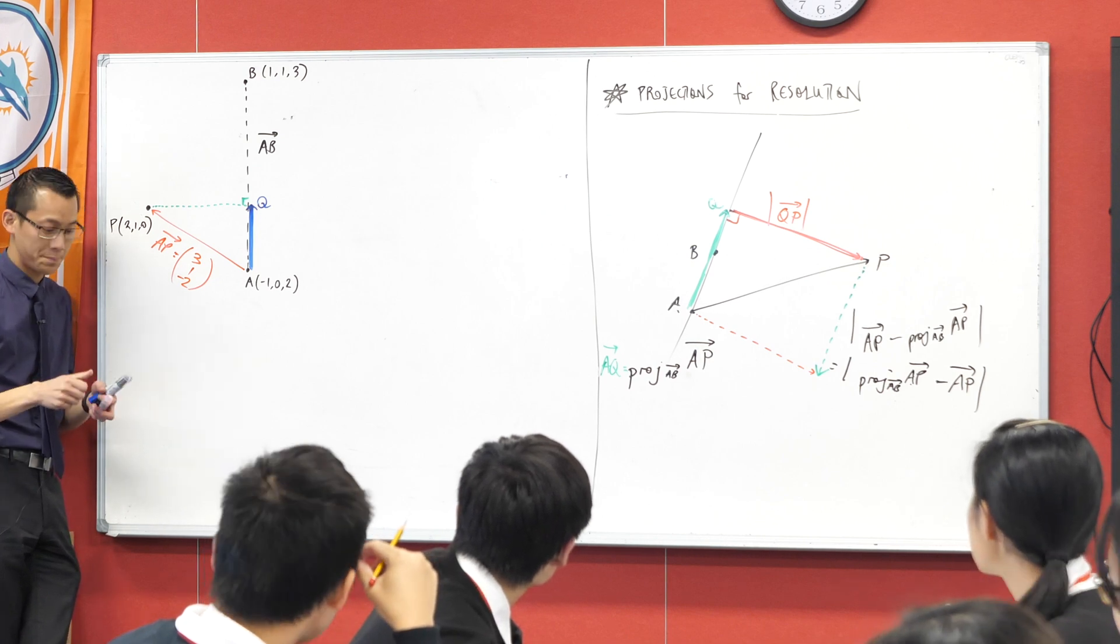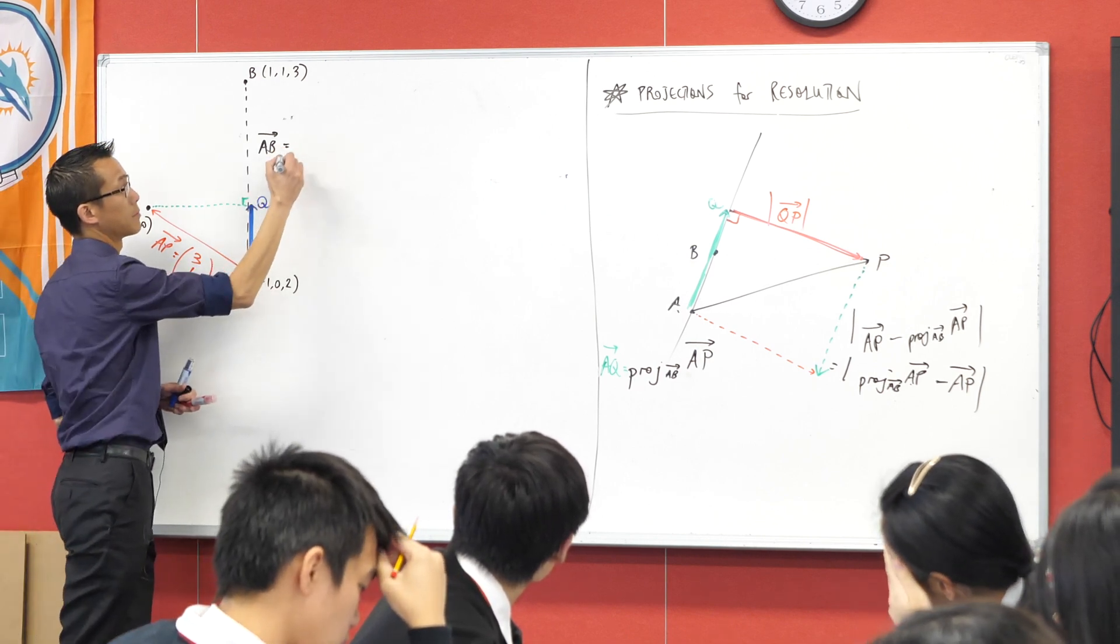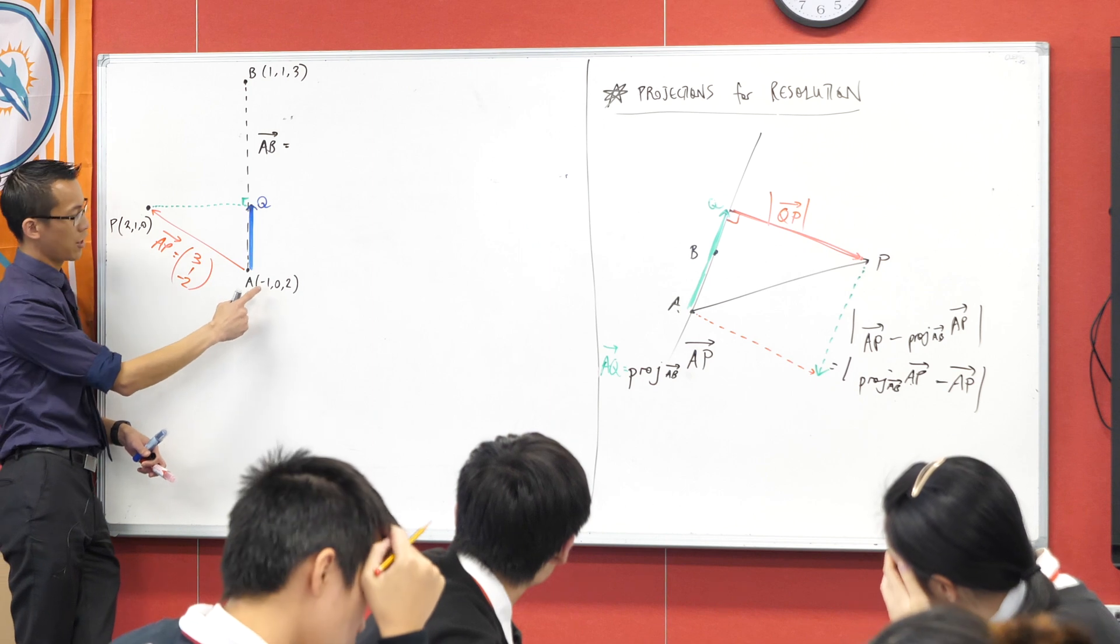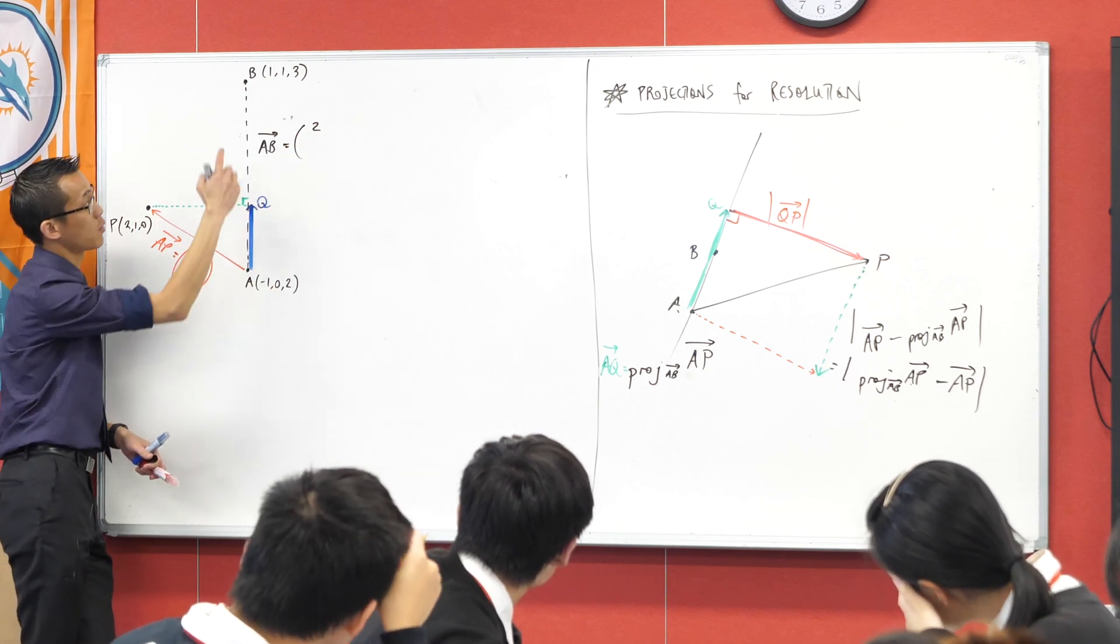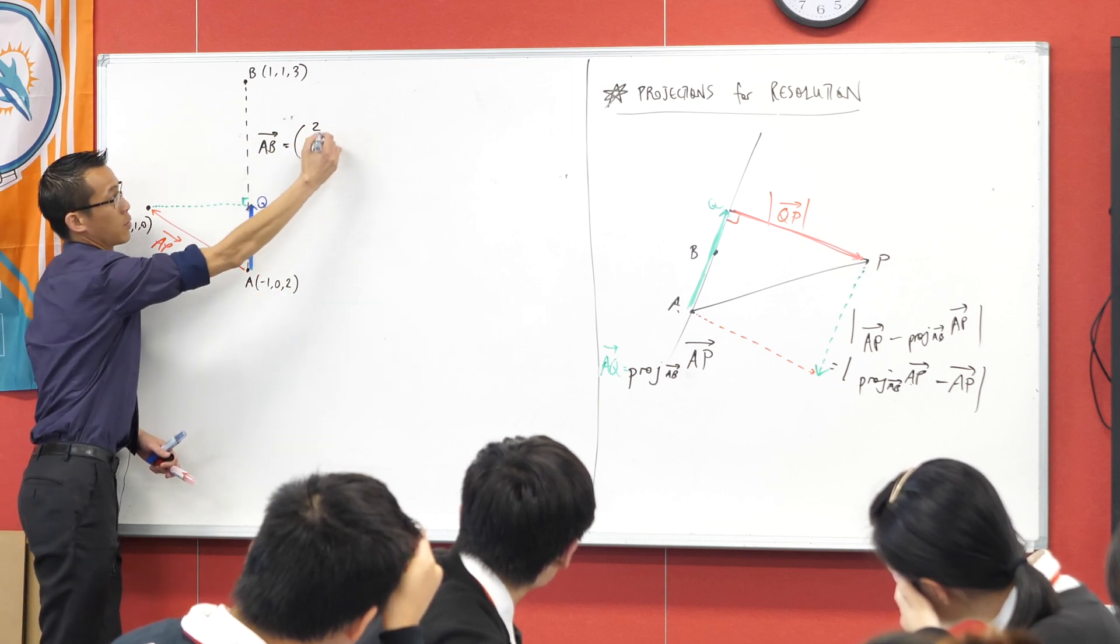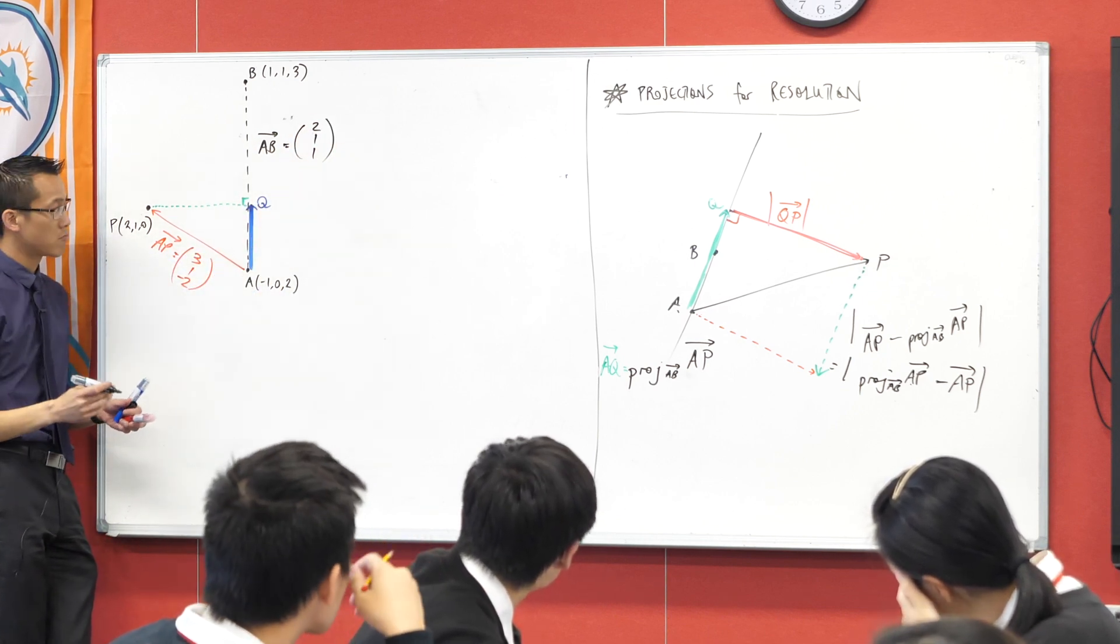What about AB? Yeah, I'm going to go from negative one to one, from zero to one, which is that, and then from two to three, which is that. So far so good?